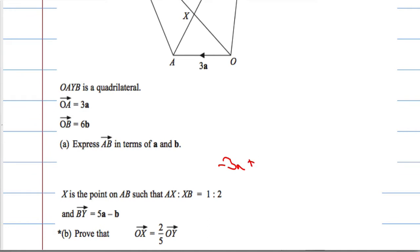So, minus 3a plus 6b, or in other words, 6b minus 3a. So fairly straightforward for the first mark.